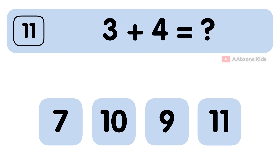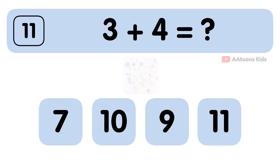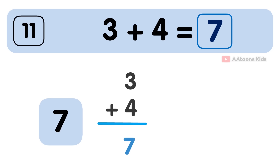3 plus 4 is equal to 7. The answer to 3 plus 4 is 7.